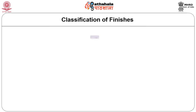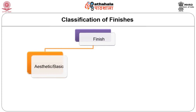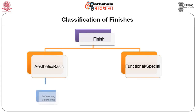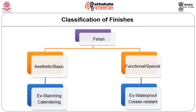Textile finishes can be classified based on function as aesthetic finishes and functional finishes, also called basic or special finishes respectively. Aesthetic finishes alter the appearance and hand of fabrics — for example, starching increases weight and shine, calendaring gives a neat look, and bleaching gives a bright white color. Functional finishes improve performance properties — waterproof finish makes fabric water repellent for umbrellas, crease resistant finish makes cotton or wool wrinkle resistant, and fireproof finish prevents burning.